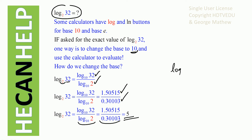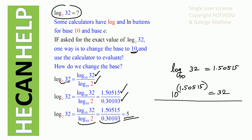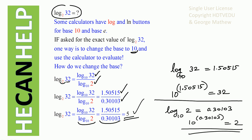When we say that log 32 to the base 10 is equal to 1.50515, it means that the base is 10. So 10 to the power of 1.50515 should be equal to 32. And log 2 to the base 10 equal to 0.30103 means that 10 to the power of 0.30103 is equal to 2. So log 32 to the base 2 is equal to 5. Logarithm to the base 2 of 32 is equal to 5.